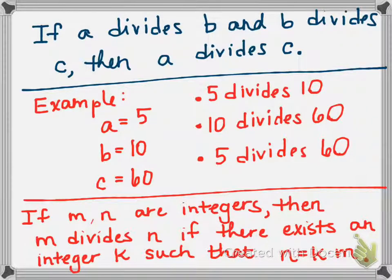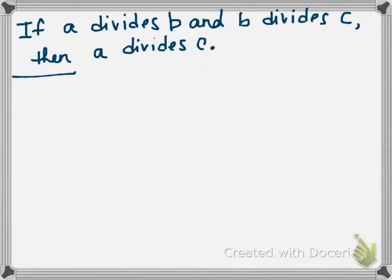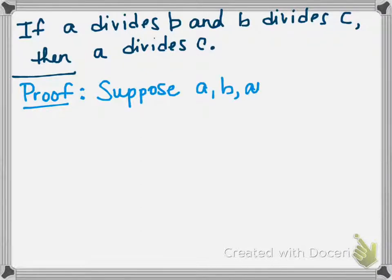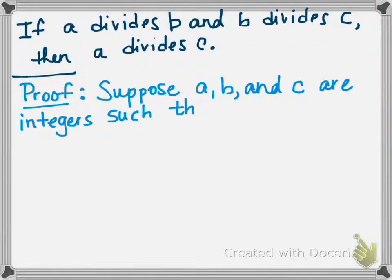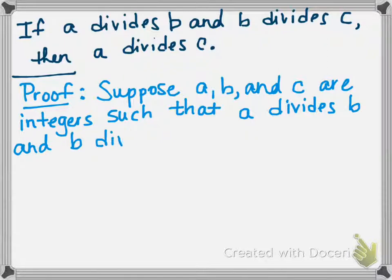So let's get to proving it. Now we have if A divides B and B divides C, then A divides C. How am I going to prove this? So when I start my proof, if I'm doing this directly, I'm going to start with the assumption. I'm going to suppose that A, B, and C are integers such that A divides B and B divides C. That's how I start. When I'm proving directly, I'm always going to start with that assumption, that if part.